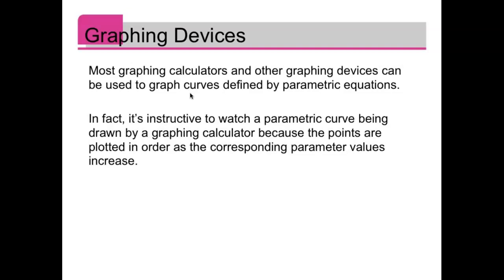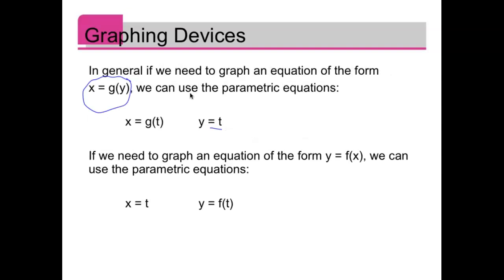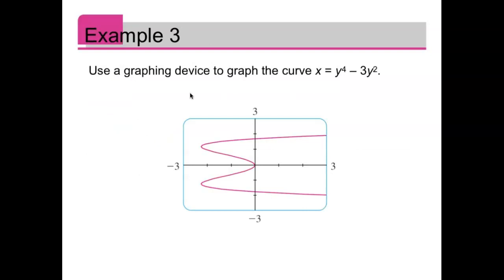Let's say you're given a function in terms of y that you want to graph. You're not even given a parametric function. You can always turn it into a parametric function by just letting y equal t, and then x is g(t). Let me show you what I'm talking about. Let's say we had an equation x equals y to the fourth minus 3y squared. If I just let y equal t, then x is t to the fourth minus 3t squared. All of a sudden we have a pair of parametric equations that we should be able to use our calculator to graph.